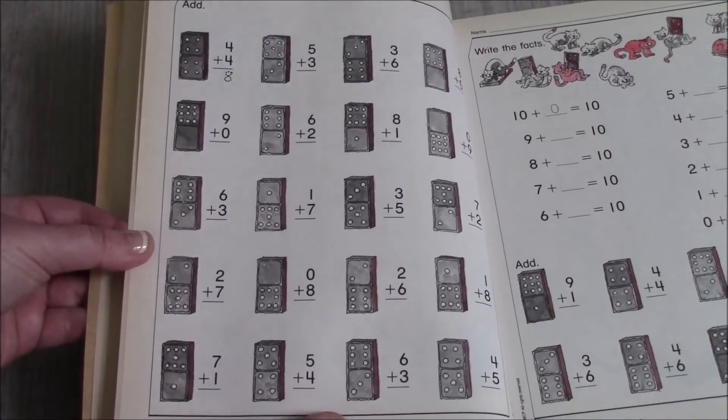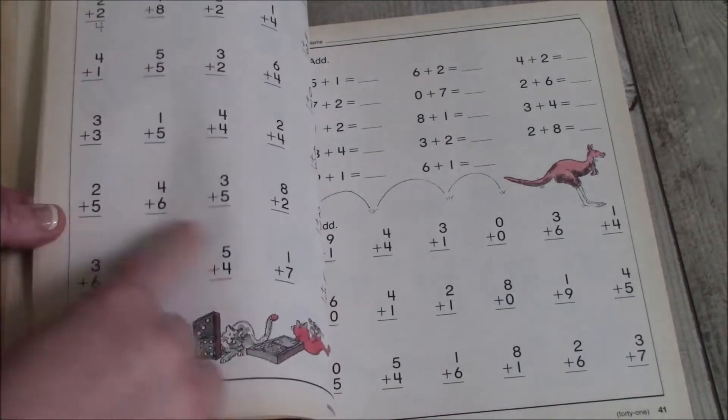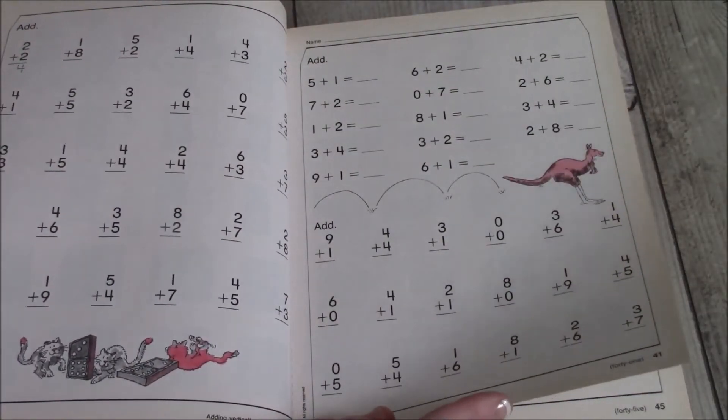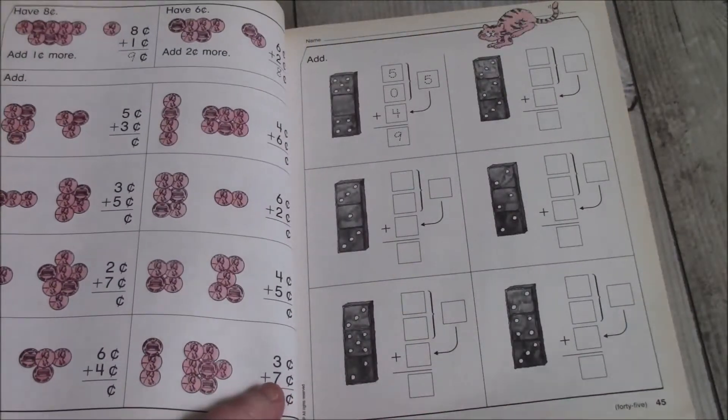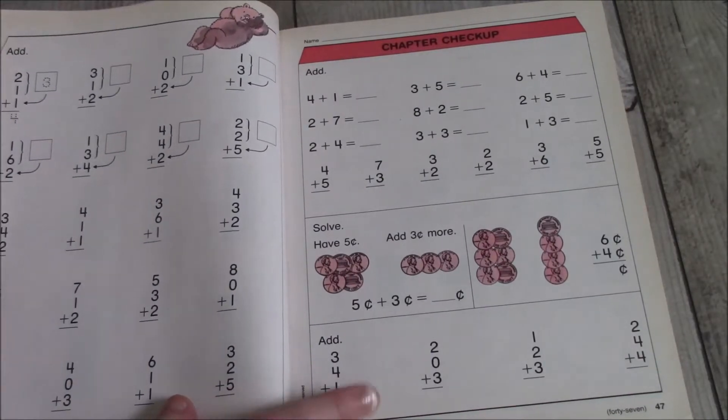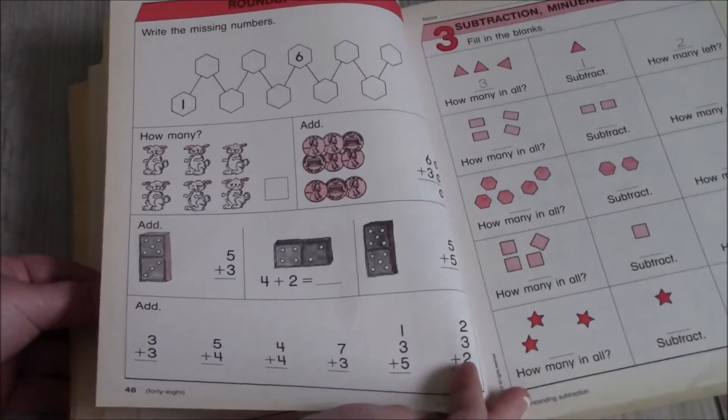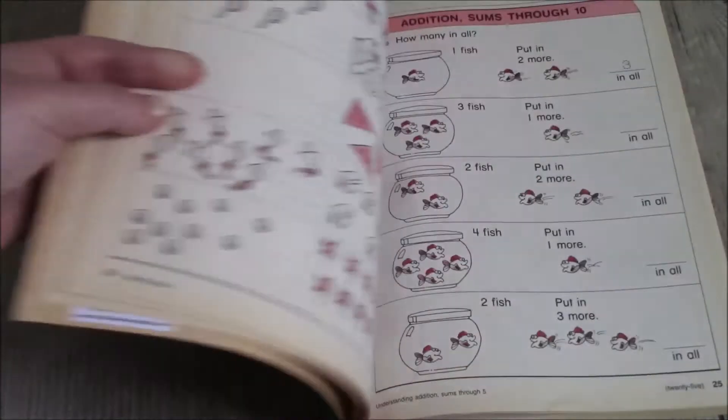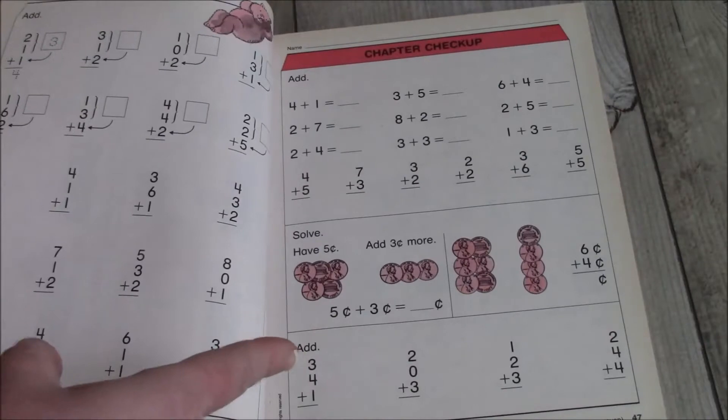Then we have domino work. I know many people love to use dominoes to work with this. And then we have pages that we're learning to memorize and work on our facts. This is best used with memorization with your flashcards. We have some money. We're going to start working with three columns. And then at the end of a chapter, you have what is called a chapter checkup or a test, a chapter review.